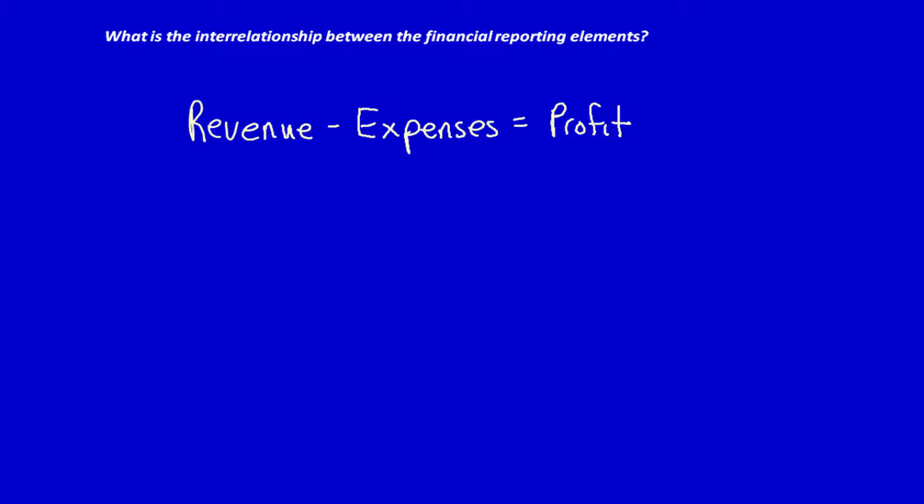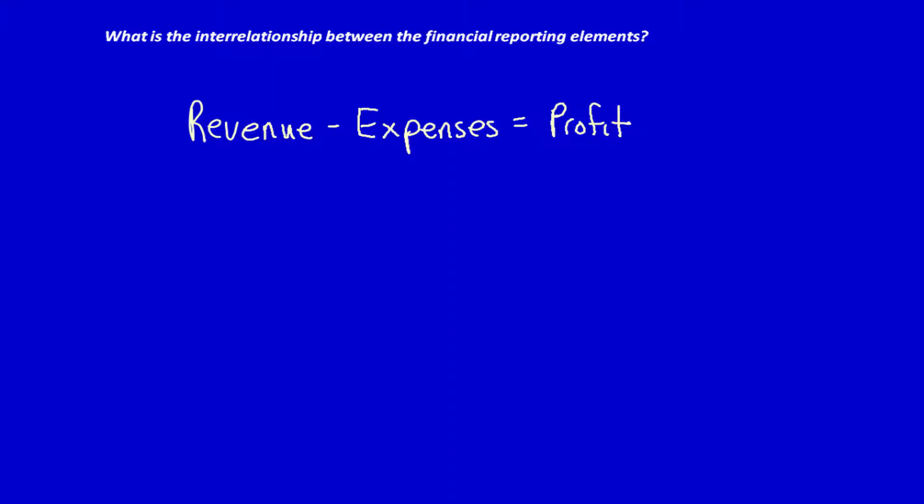In the first video we noted that our focus would be on profit-oriented businesses, which are businesses whose purpose is to make a profit. How is profit calculated? We use the elements revenue and expense. Profit is also called net income or net earnings. What the business earns — revenue — less the costs used, consumed, or incurred to earn that revenue — expenses — determine a business's profit.